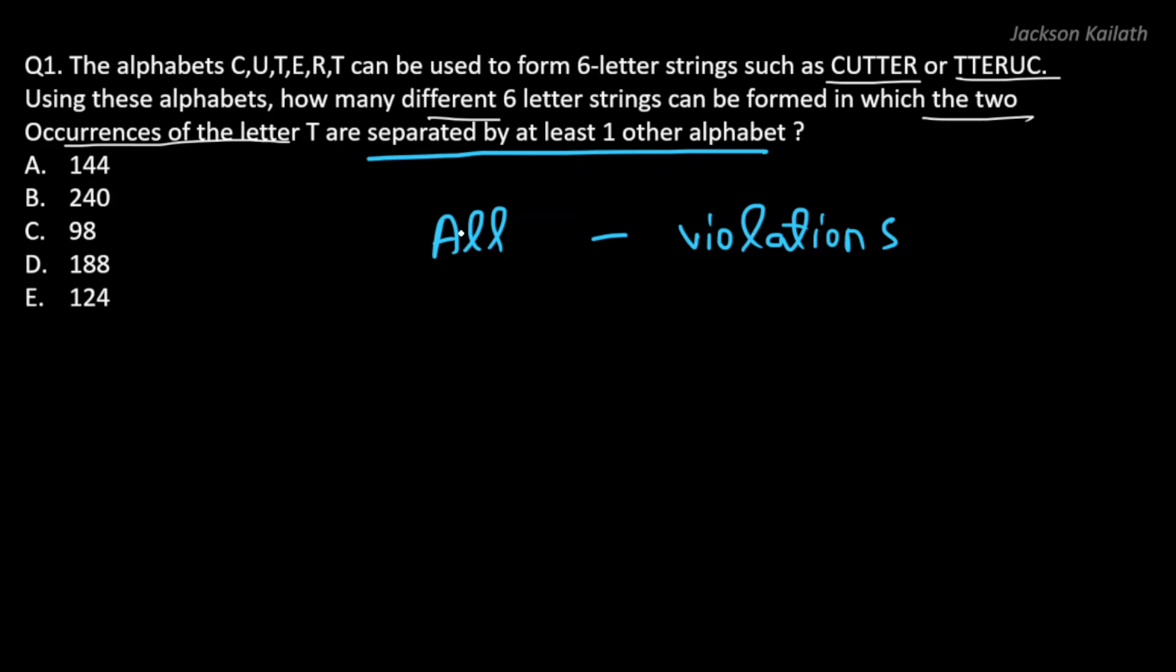Now let's go ahead and first find all the different types of arrangements that can be formed without taking into consideration the condition. For this, we have six letters and two of them are repeating. Therefore, the number of arrangements that can be formed is 6 factorial divided by 2 factorial. You will have studied this when you studied permutations.